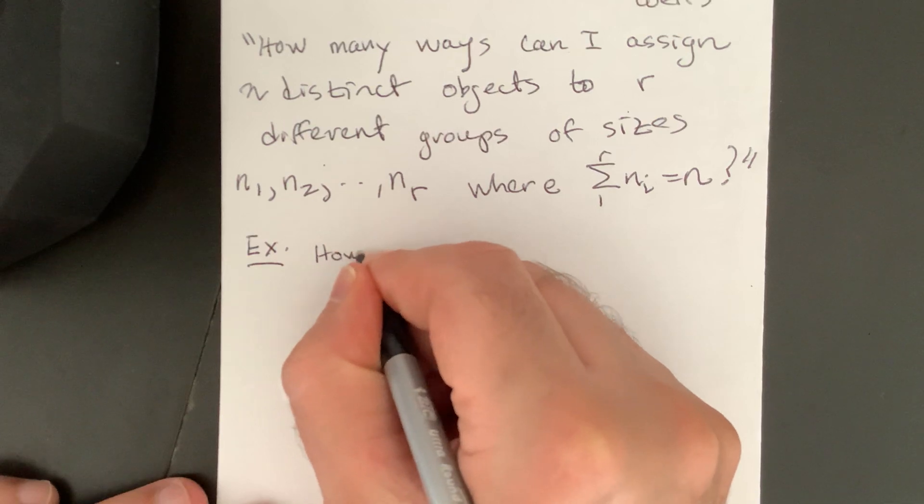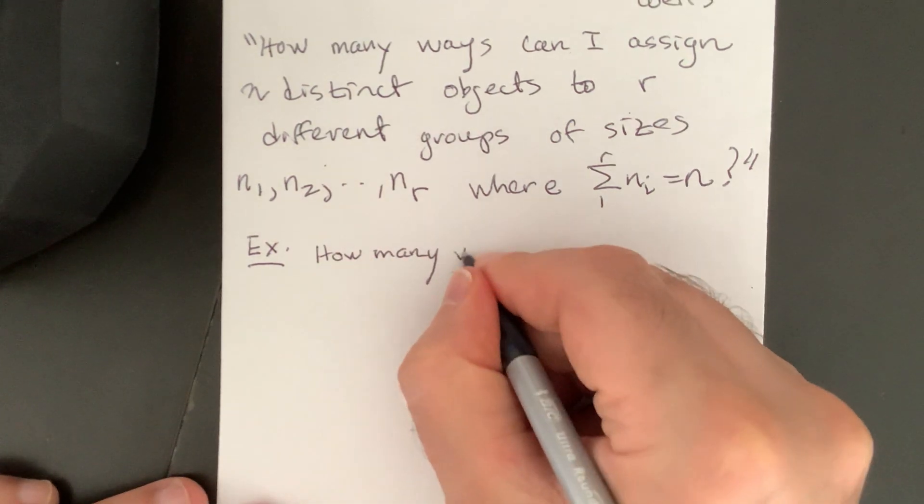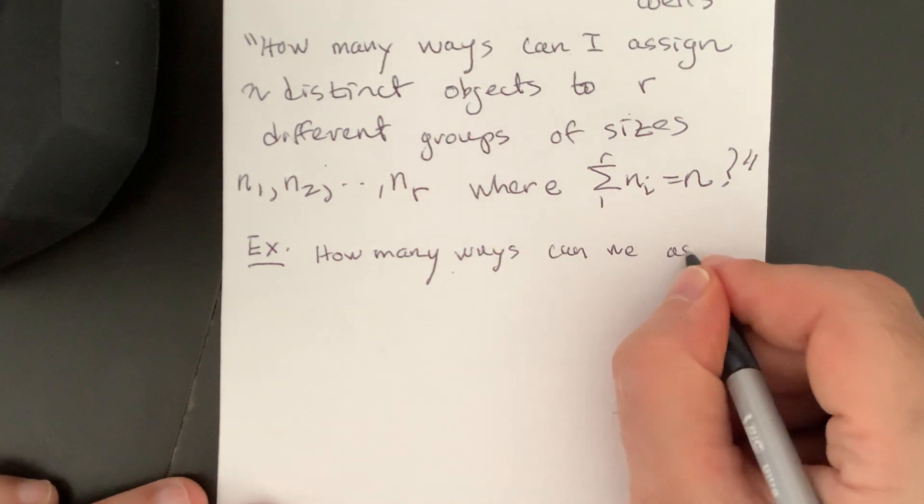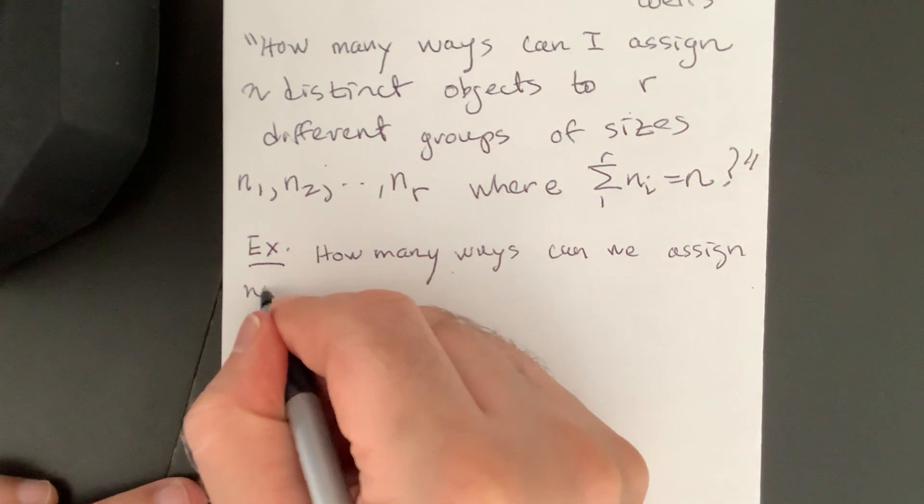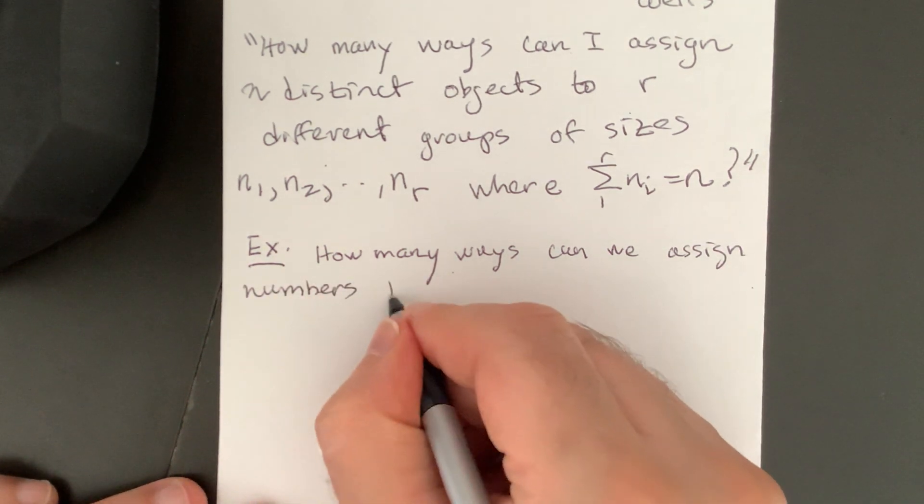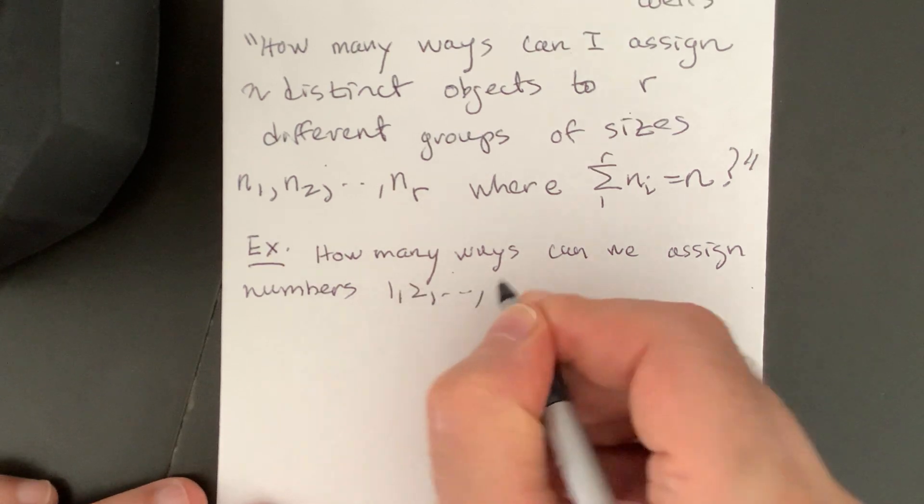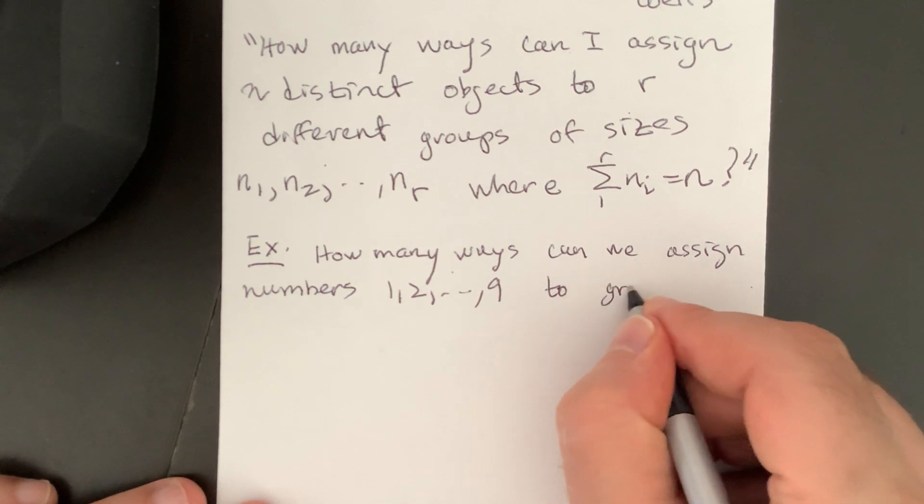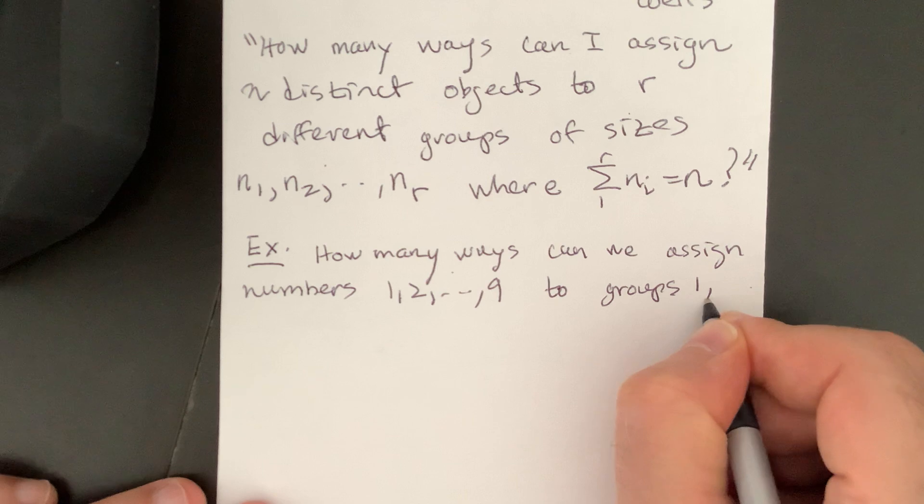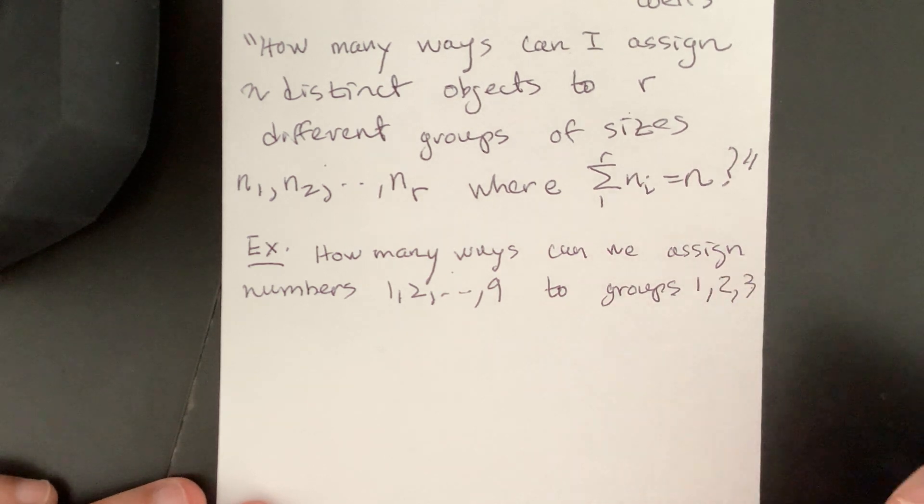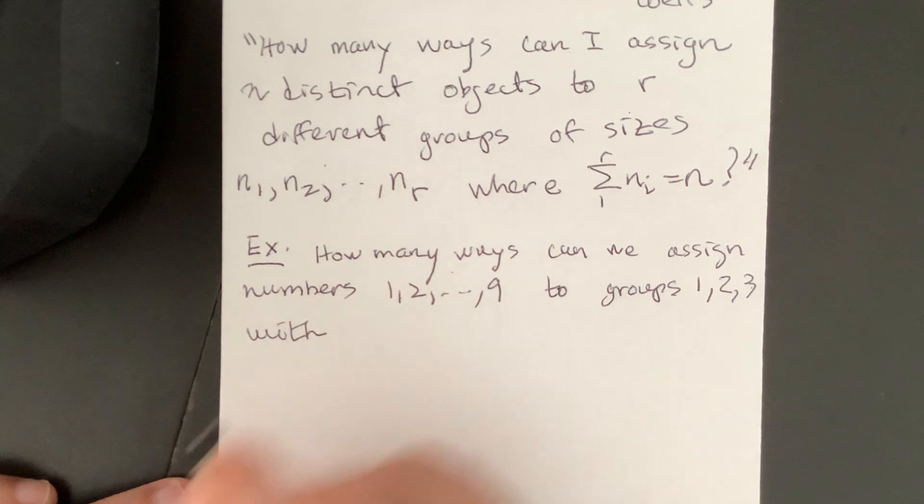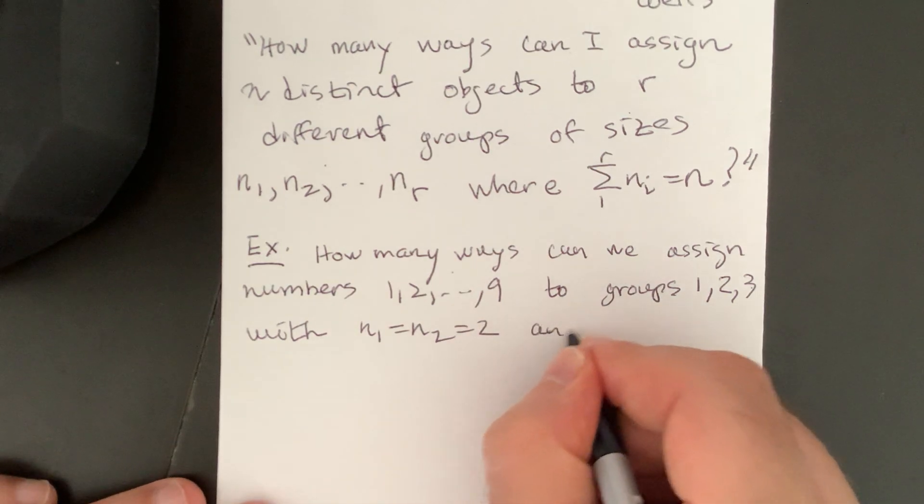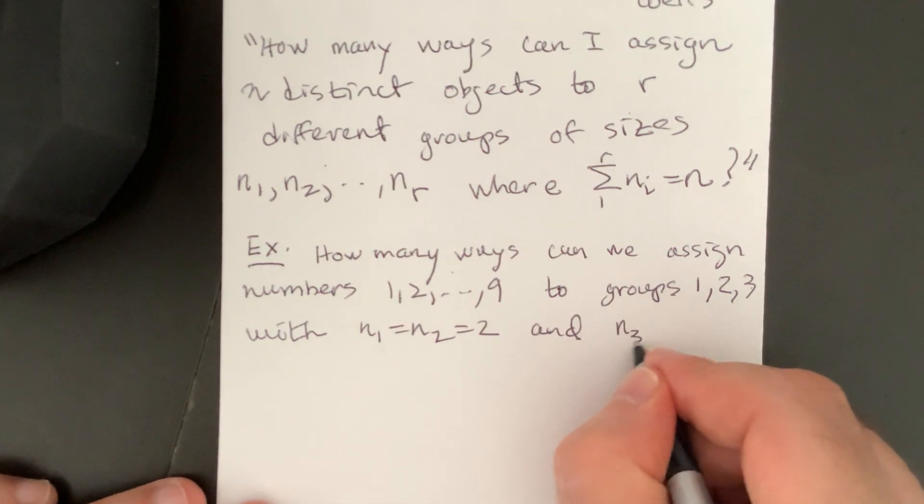Let's just think about how can we, how many ways, we'll just think of numbers. How many ways can we assign the numbers 1, 2, dot dot dot, up to 9, to three groups, groups 1, 2, and 3, with n1 equal 2, n2 equal 2, and n3 equal 5.